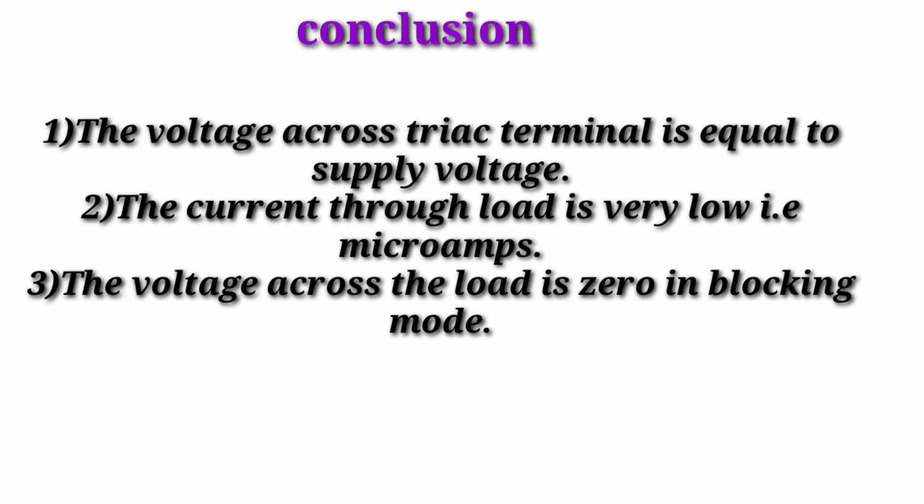When the TRIAC is in the OFF state, the voltage across the TRIAC equals the supply voltage. The conclusion after the blocking mode practical: the voltage across the TRIAC terminal is equal to the supply voltage, the current through the load is very low — in microamperes — and the voltage across the load is zero in the blocking mode.